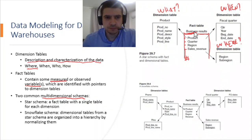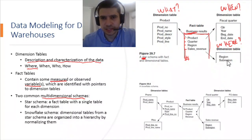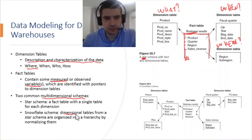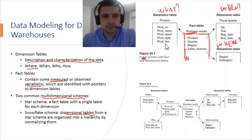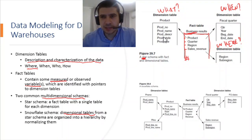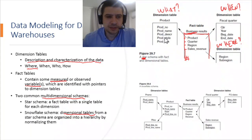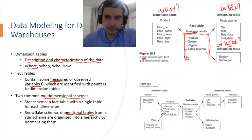There are two common multidimensional schemas. The star schema has a fact table related to dimension tables. The snowflake schema is similar but extended, because the dimension tables are normalized. There is no right or wrong answer — it depends on the design, for example, how often the values in a dimension change and how you want to track them.